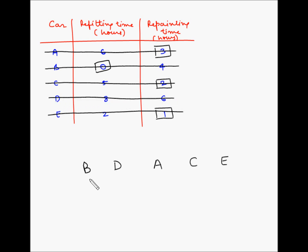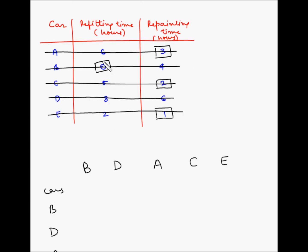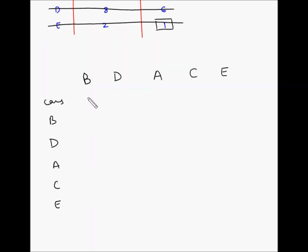So the sequence is B, D, A, C, E. Now let us find out the total operation time by listing the cars in this sequence: B, D, A, C, E.